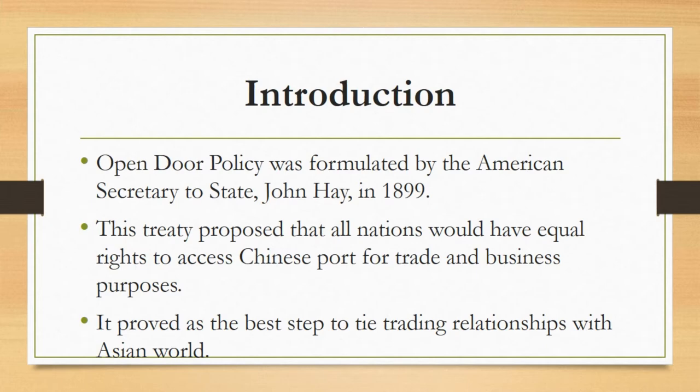The treaty proposed that all nations would have equal rights to access Chinese ports for trade and business purposes. This was informed to all the first world countries like Britain, Germany, France, Italy, Japan, and Russia. It received mixed response from the aforementioned countries but was later assumed to be the best step to tie trading relationships with the Asian countries.